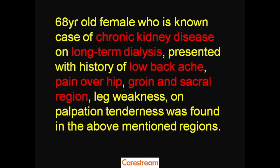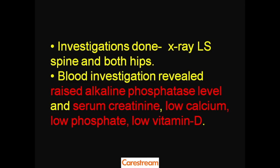We just finished a case where bone quality is normal but it is deficient in amount. Now coming to the second case scenario: a 68-year-old female, a known case of chronic kidney disease on long-term dialysis, presented with low backache, pain over the hip, excruciating pain in the groin and sacral region, leg weakness, and acute tenderness on palpation in all these regions. Investigations done were radiographs of the lumbar spine and both hips, along with blood investigations.